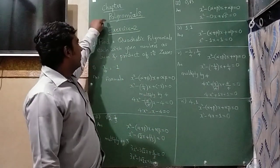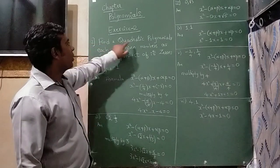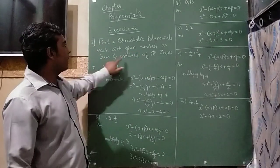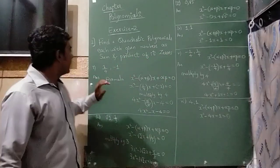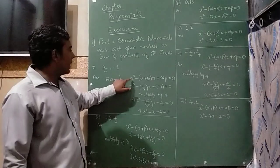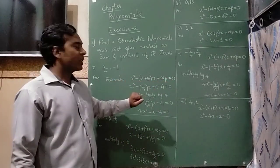Hello students, polynomial chapter exercise 2, problem number 2 is find a quadratic polynomial each with given numbers as the sum and product of its zeros. They have given two numbers, one is sum and one is product. The formula is x² - (α+β)x + αβ = 0.